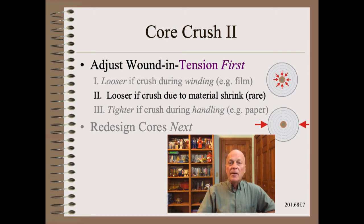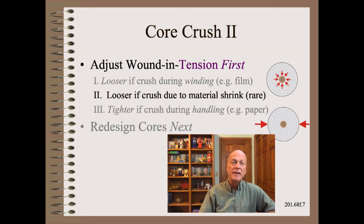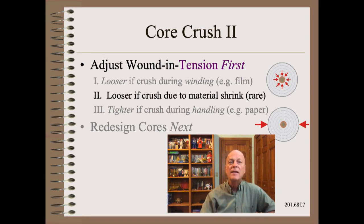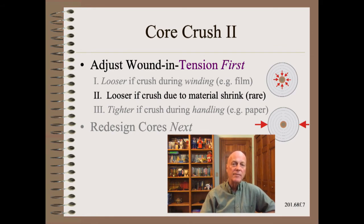Finally, there is a less common core crush that occurs with certain materials that shrink after winding. These could be materials that are wound hot, or materials such as biaxially oriented polypropylene — BOPP for short — that shrink due to crystallization in the first day or so after extrusion. In either case, this is totally different again because the crushing forces did not come from winding and did not come from the outside world — they came from chemistry. Also, in modest to extreme cases, Type 2 core crush is not even a winding problem.